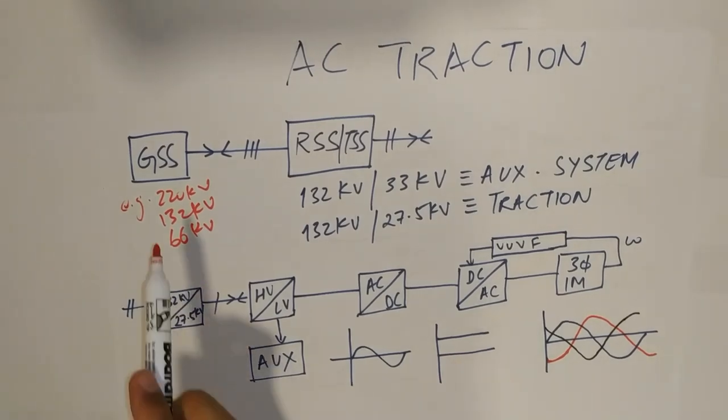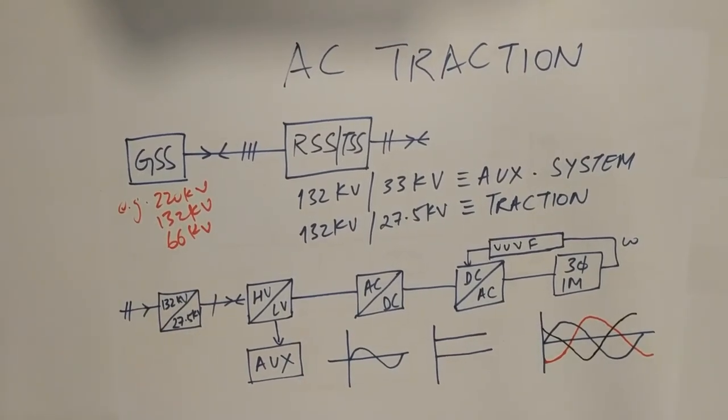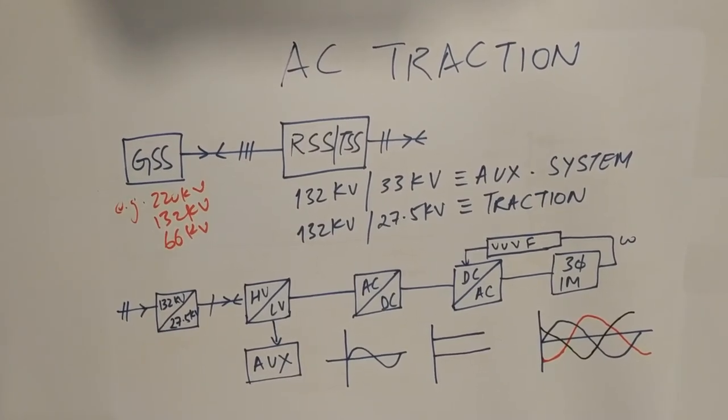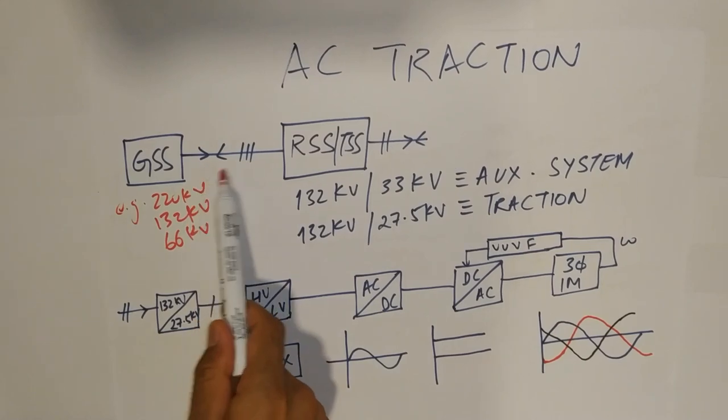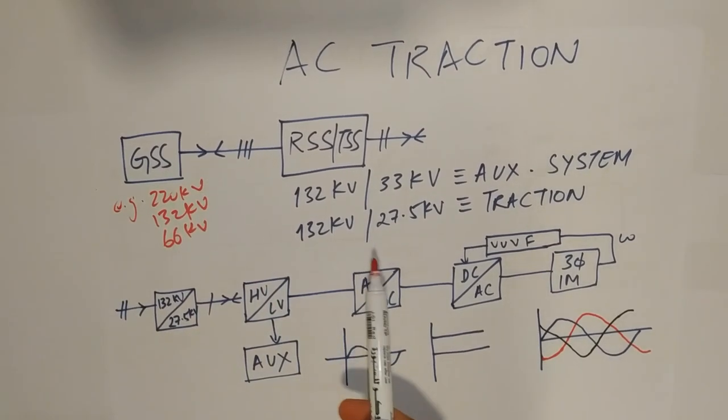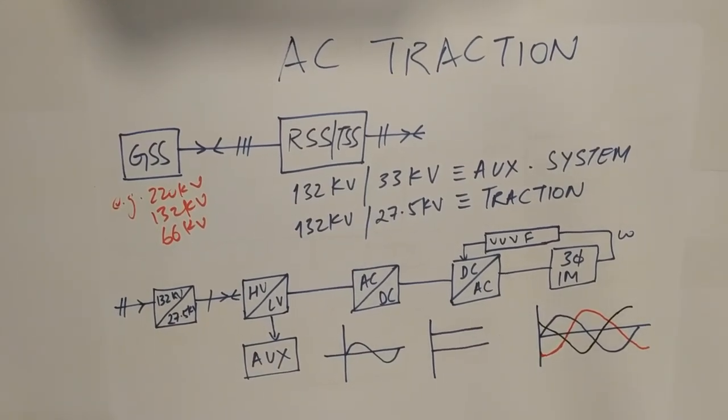This high voltage then flows through cables or overhead lines and enters into our receiving substation. This I have shown bi-directional as sometimes the power from the traction substation goes back to the grid. That is a part of regenerative braking.